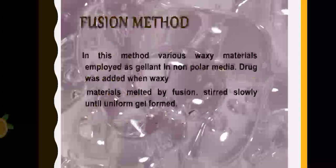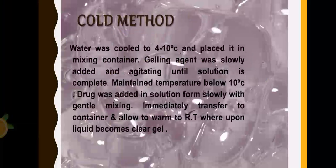In cold method, the water is cooled to 4 to 10 Celsius and then placed in a mixing container. Then gelling agent is slowly added to it and we mix until the solution is formed. We keep this container below 10 Celsius and the drug is then added in solution form slowly with gentle mixing. Then we transfer it to container and allow it to warm at room temperature where it becomes a clear gel.